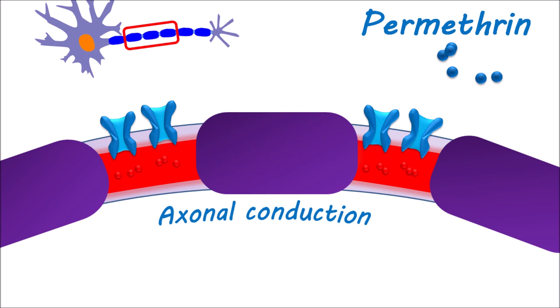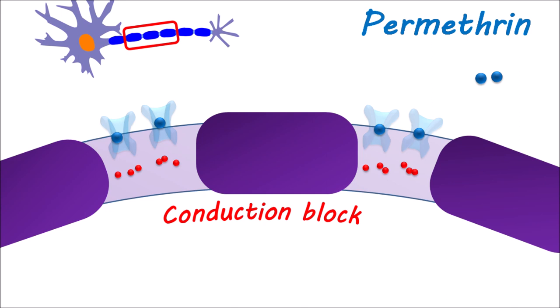Permethrin can block these sodium channels, inhibiting axonal conduction and resulting in a conduction block. This results in muscle paralysis, particularly respiratory paralysis in the mites, producing an acaricidal action.